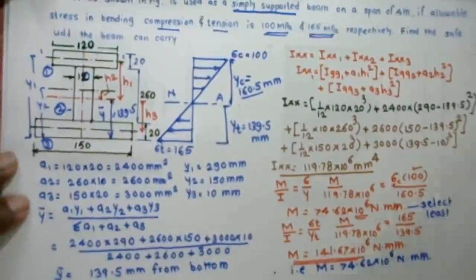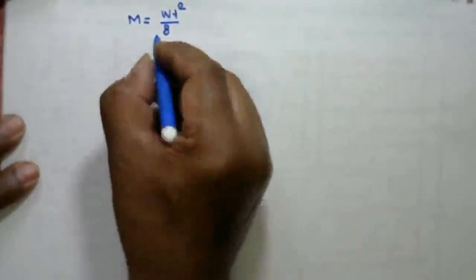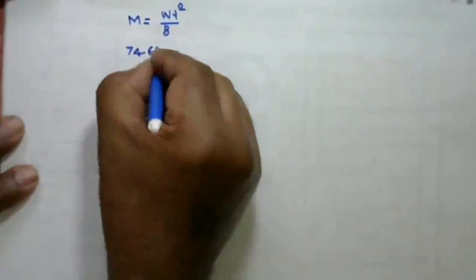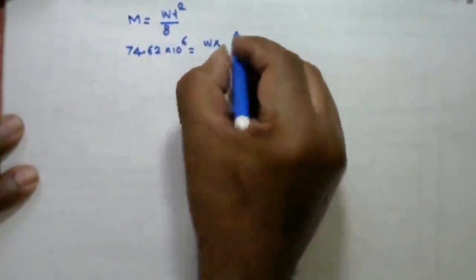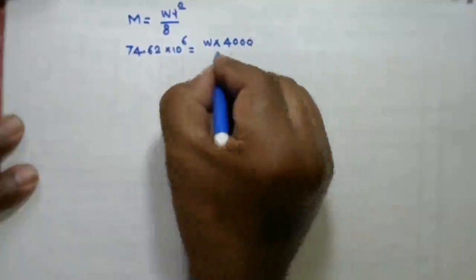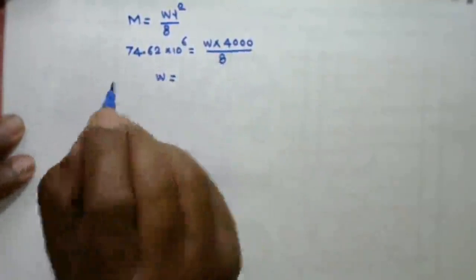To calculate the safe UDL, for a simply supported beam with UDL throughout the span, the bending moment is M = WL²/8. Setting the maximum bending moment equal to 74.62 × 10⁶ N·mm with span L = 4 m, we solve for W.